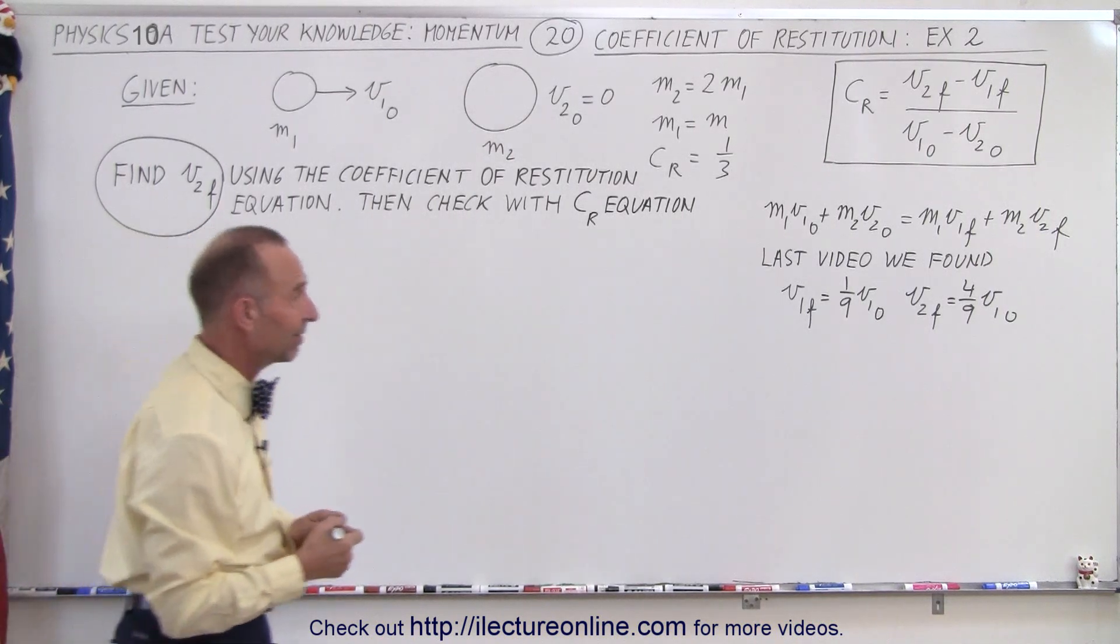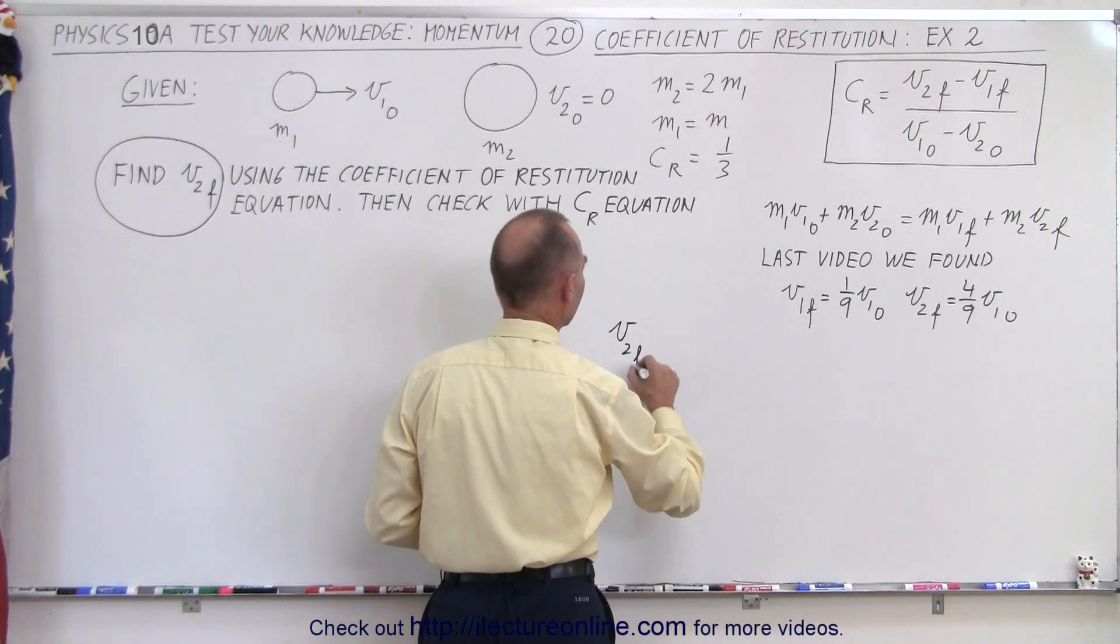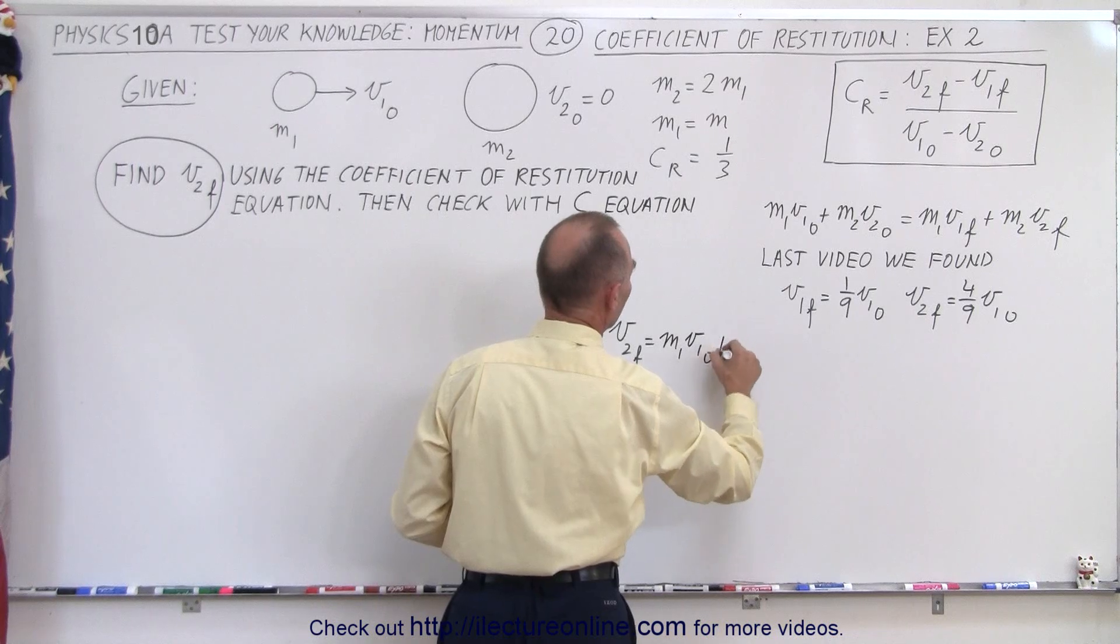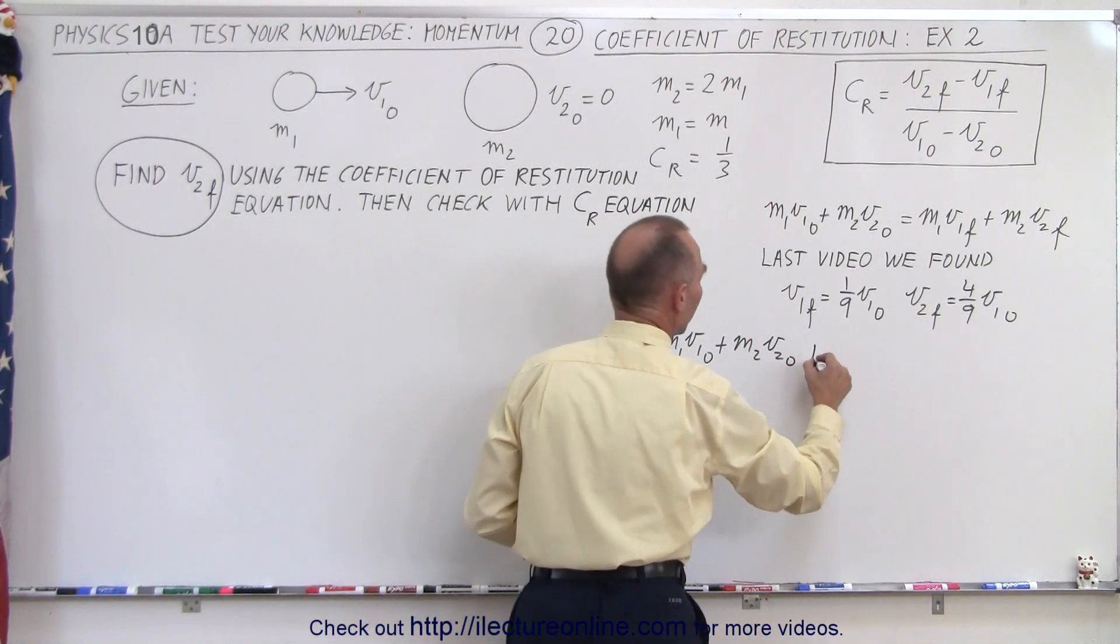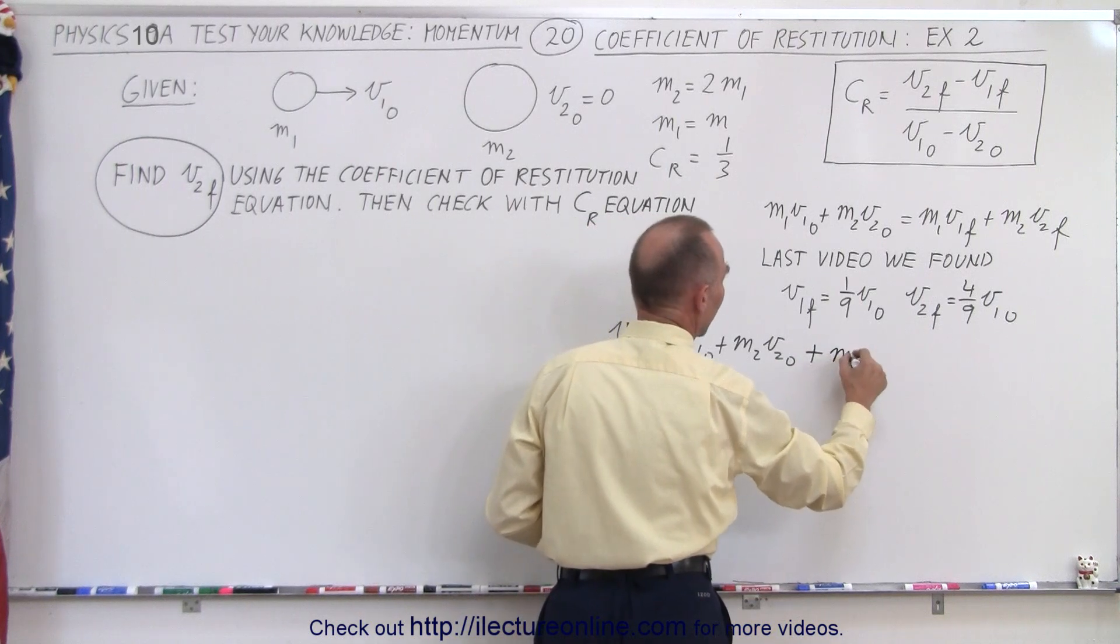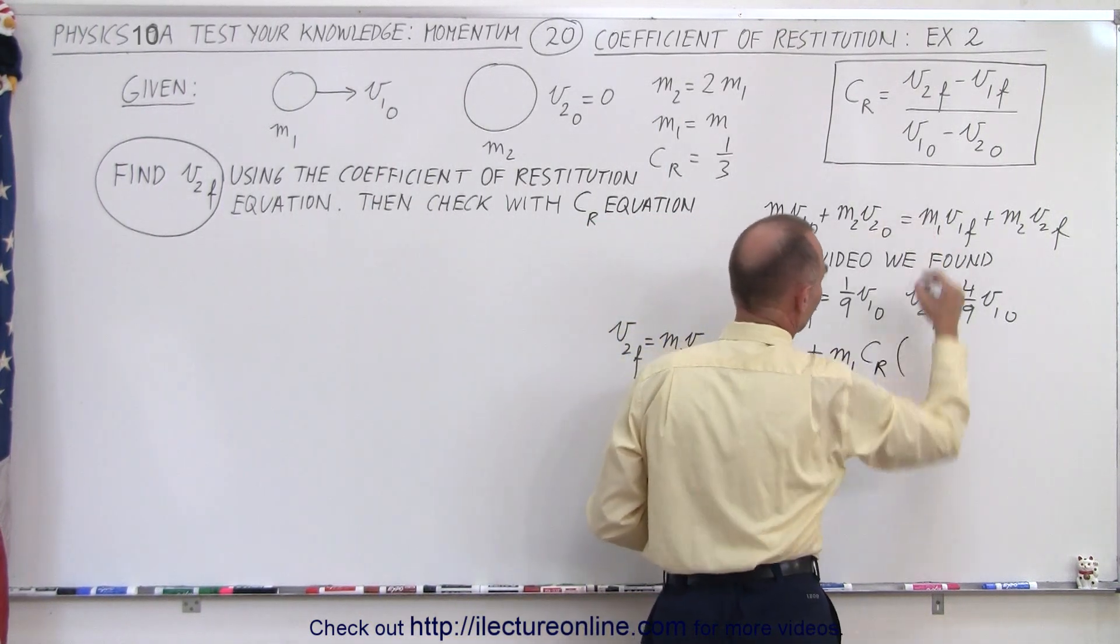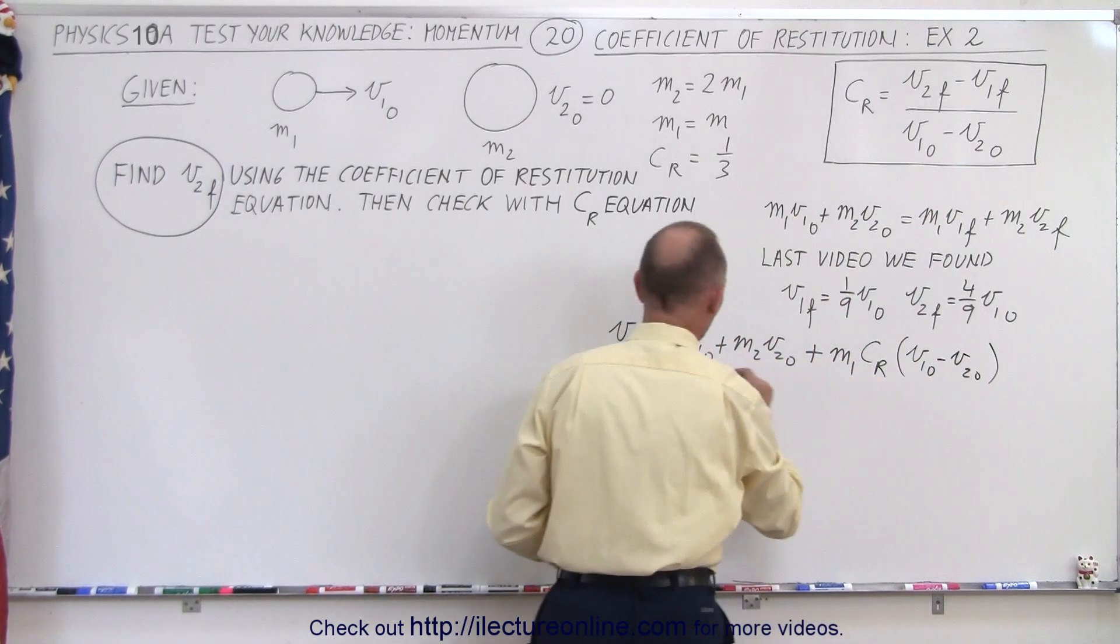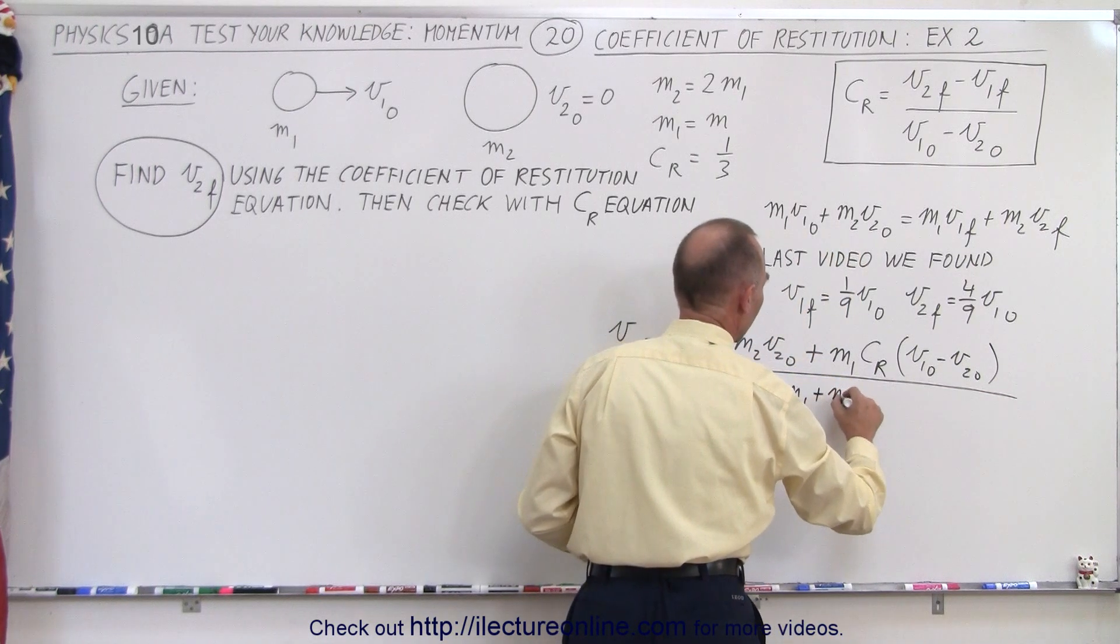So we need to come up with that second equation that tells us that v2 final is equal to m1 v1 initial plus m2 v2 initial plus m1 times the coefficient of restitution times the difference between the initial velocities, all divided by m1 plus m2.